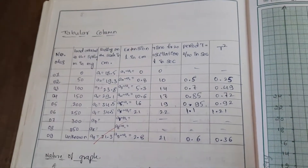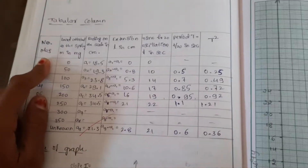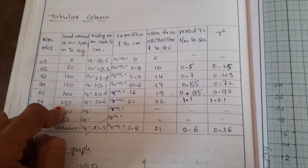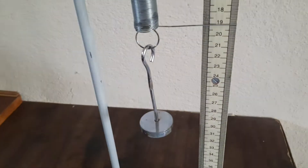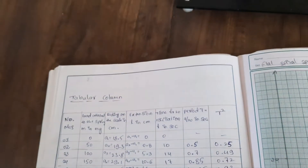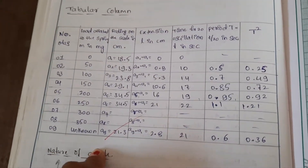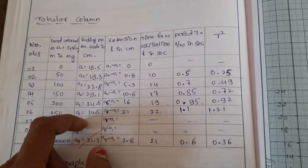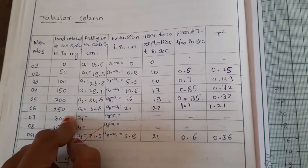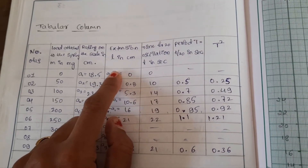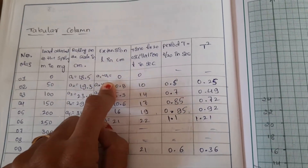Once you note down the readings, put them in the tabular column. Increase the weight as 0, 50, 100, 150 grams and so on. You also have to measure the reading for the unknown weight — you will not know what it is until you complete the graph, which will reveal how much the weight is. Take 5 or 6 readings from 0 to 250 grams, plus the unknown weight.